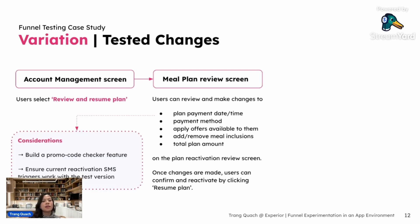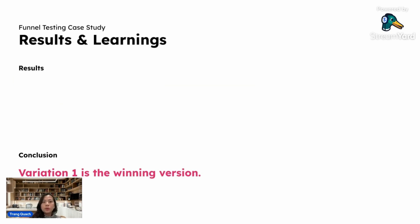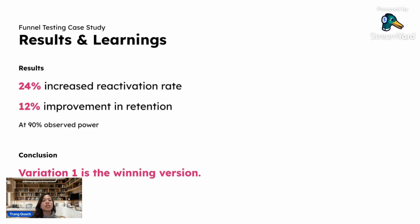A few things to consider: as part of this variation, we also needed to account for a new feature to check for a promo code applicable to a specific user, and ensure any reactivation SMS triggers work with the test variations. Once users click 'Resume Plan,' they are taken to the plan confirmation screen again, where they can review new inclusions, total amount to pay, the discount included — which was previously not available on this screen — as well as the selected payment method and payment time. With this experiment, we achieved a 24% increase in reactivation rate and 12% improvement in retention at 90% statistical power. This is a great result, and it's enough for us to conclude that variation one is the winning version.